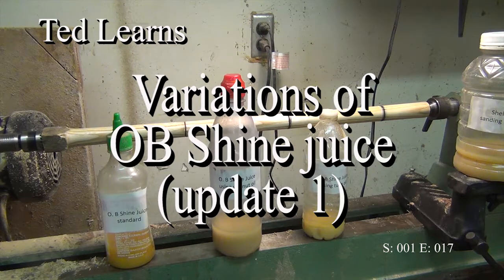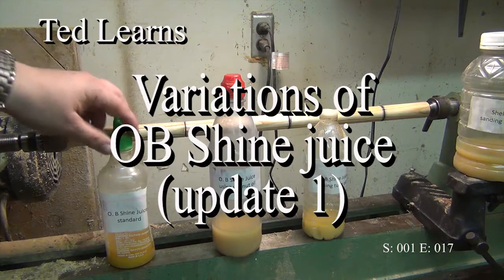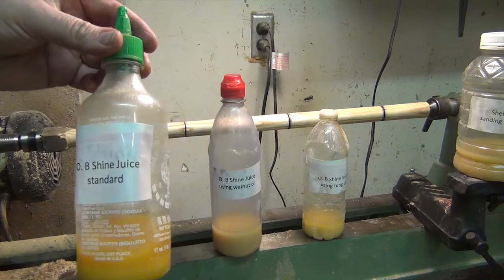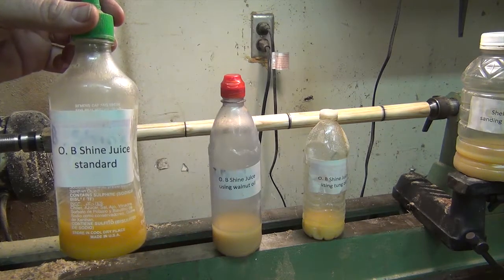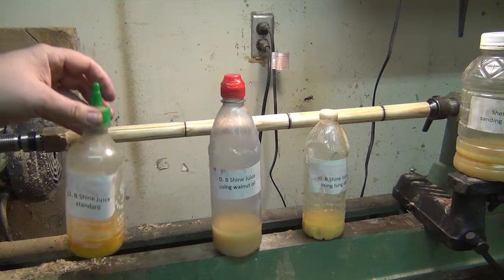A while ago I tested variations of OB shine juice. The standard mixture which is denatured alcohol, boiled linseed oil, and shellac in equal measure.